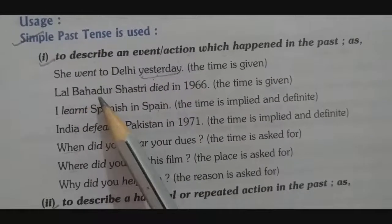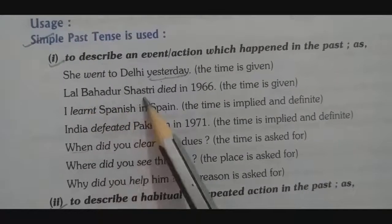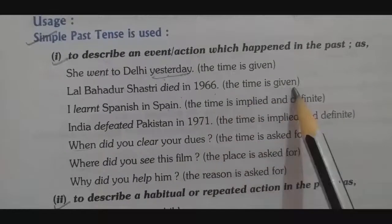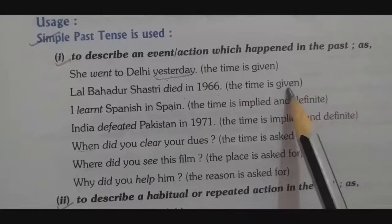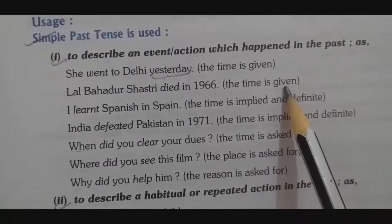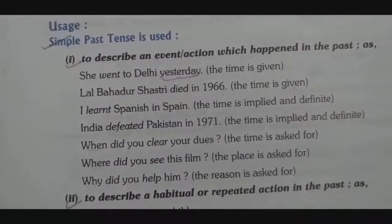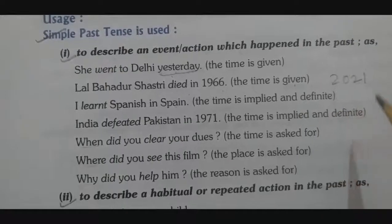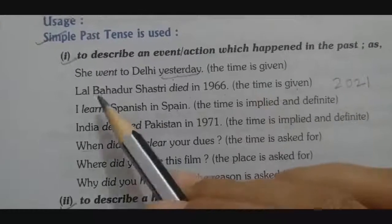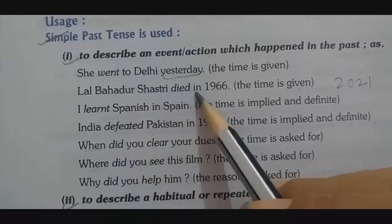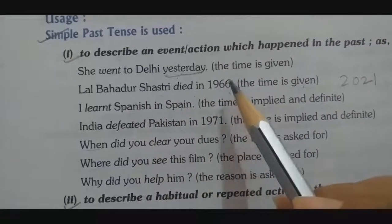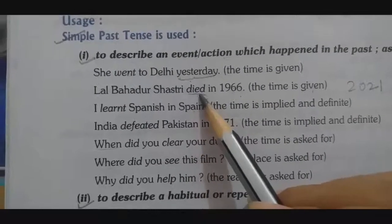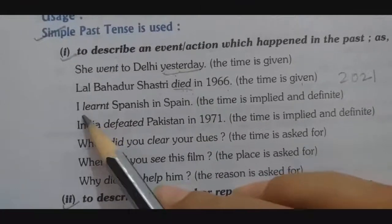Another example: 'Lal Bahadur Shastri died in 1966.' Here the time is given — 1966 — which is in the past. The current year is 2021, so 1966 is clearly in the past. The verb 'died' is in the simple past form.